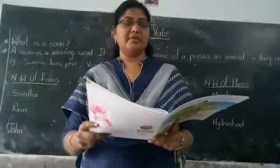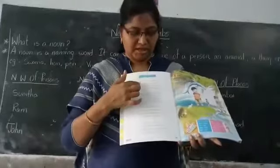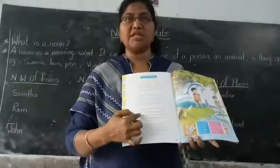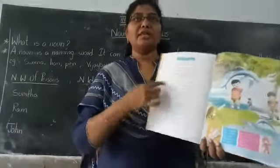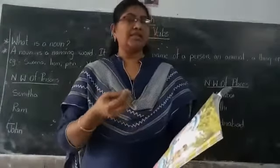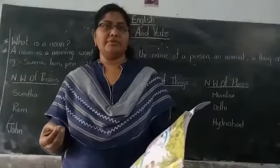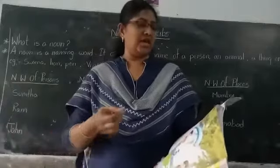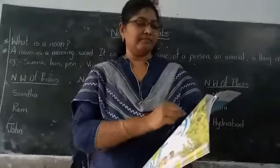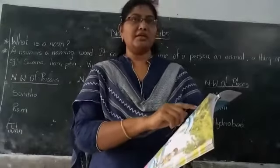Today I will read out only two stanzas; remaining two stanzas we will read next class. In the first stanza, can you notice any things or names related to our nature? Take your pencil and underline: earth, sky, wind, trees, waves, and sea.